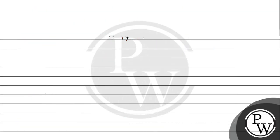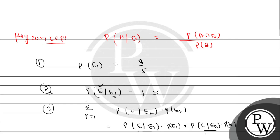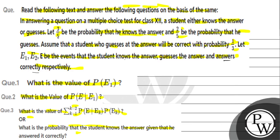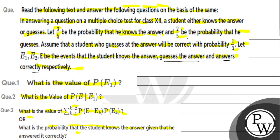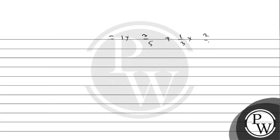So the first term is 1 × 3/5. Then plus P(E|E2)·P(E2). E2 is the event that the student guesses the answer and gets it correct. The probability of guessing correctly is given as 1/3, so P(E|E2) = 1/3. And P(E2), the probability of guessing, is 2/5. So it is (1/3) × (2/5). This gives us 3/5 + 2/15.